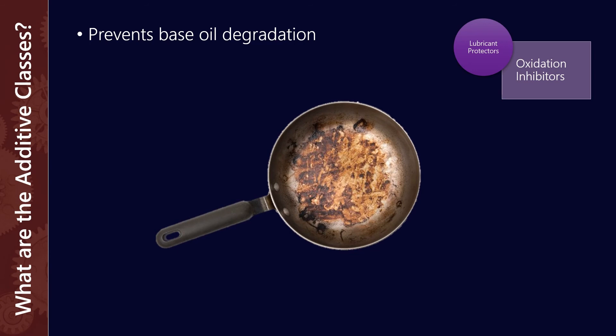What's happening in lubricants is the same process on a larger scale—it's exactly the same thing that happens with cooking oil. At high temperatures and with interaction with oxygen, we get a breakdown of the base oil and some of the additive package as well. Oxidation inhibitors help prevent that from occurring or at least slow down the process.